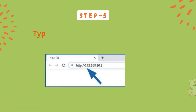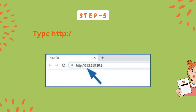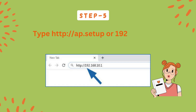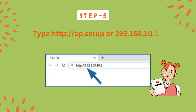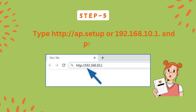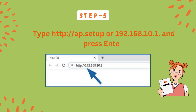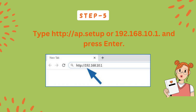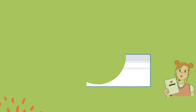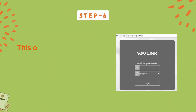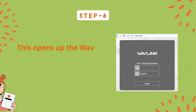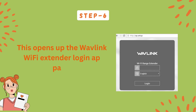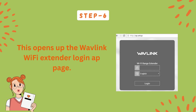Step 4: Open a web browser on your computer. Step 5: Type http://ap.setup or 192.168.10.1 and press Enter. This opens up the Wavelink Wi-Fi extender login AP page.